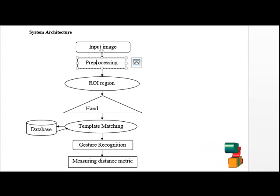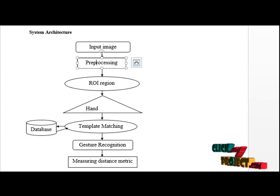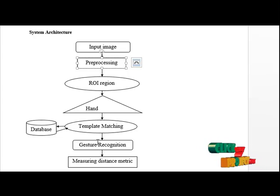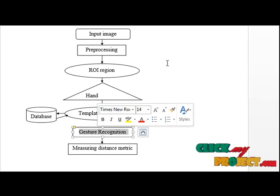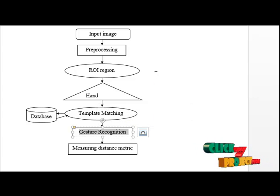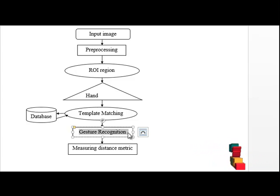Next is the template matching step. In template matching, we segment the hand and store it in a separate folder. It is then matched against the database. The next step is the hand gesture recognition, where the process matches which person's hand gesture is being performed.